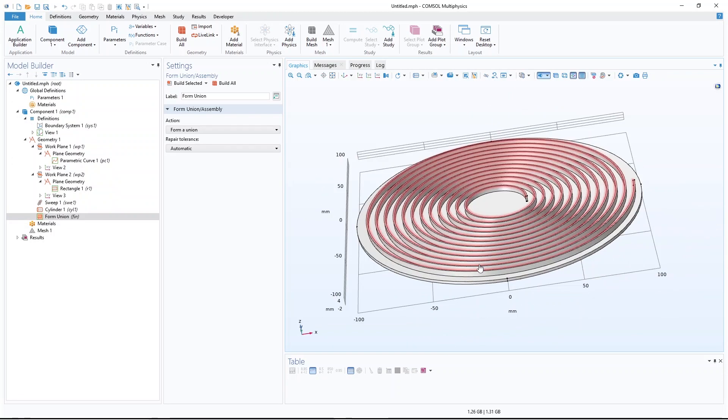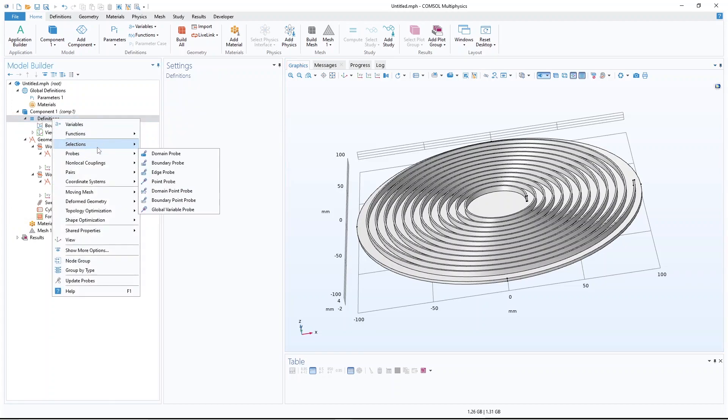Okay, so we have learned already how to create a spiral structure. Now I'll show you how to assign colors. So you come to definition, right click on definition, select selection, explicit.